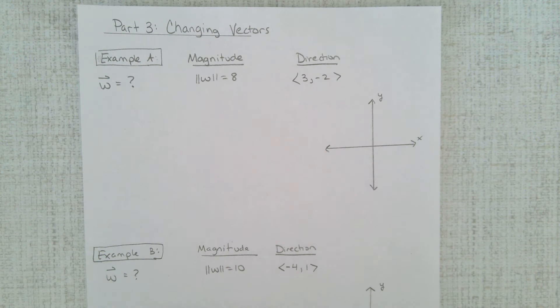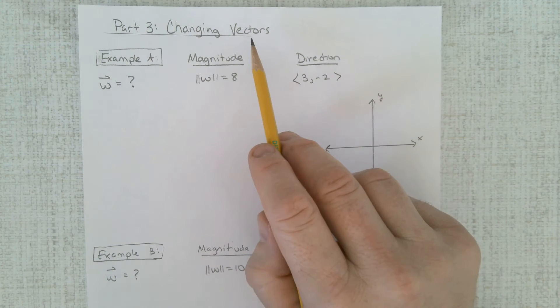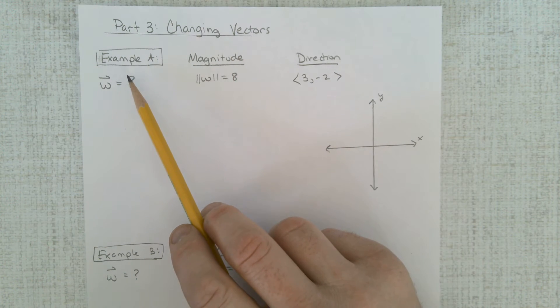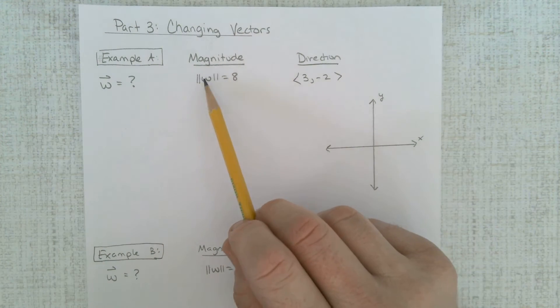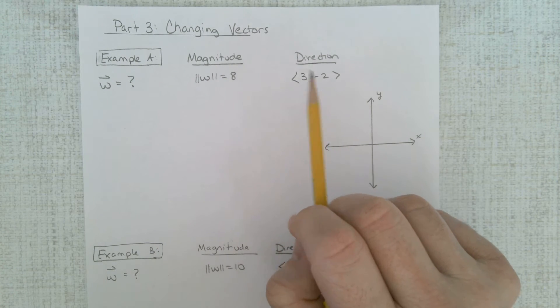Alright, we have one more type of problem to do here. We're going to change these vectors and we're going to change the vector w to a magnitude of 8 in a direction of 3, negative 2.